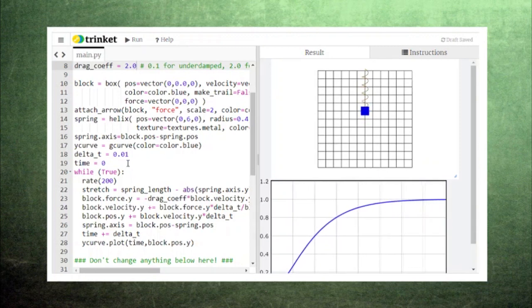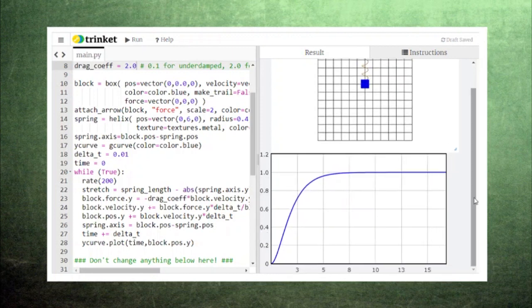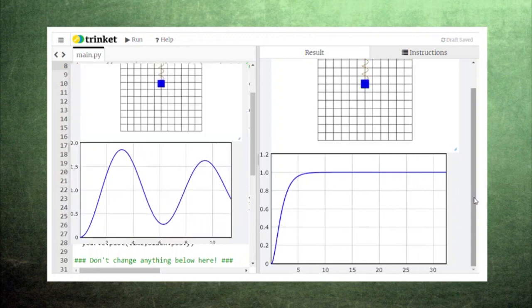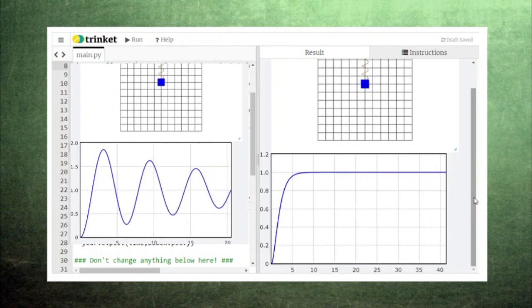These behaviors are so different that we give them special names. When the drag coefficient is so large that our block can't complete any oscillations, we say that the spring is overdamped. But when the drag coefficient is weak enough to allow our block to oscillate, we say that the spring is underdamped.